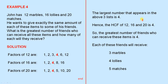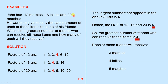The largest number that appears in the above 3 lists is 4. Hence, the HCF of 12, 16, and 20 is 4. So the greatest number of friends who can receive these items is 4. Each friend will receive 3 marbles (because 4 × 3 = 12), 4 lollies (because 4 × 4 = 16), and 5 matches (because 4 × 5 = 20).